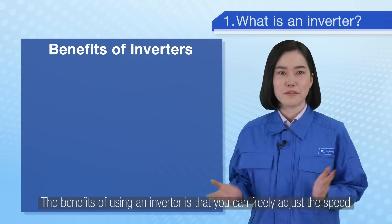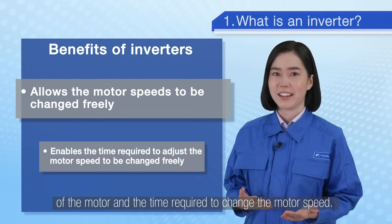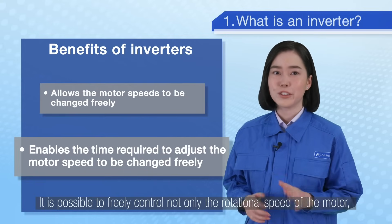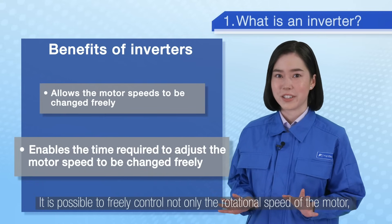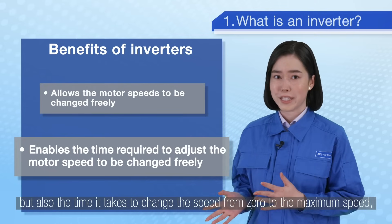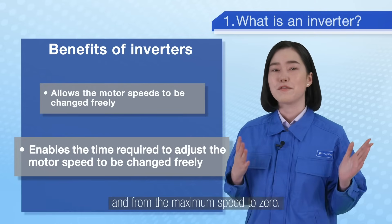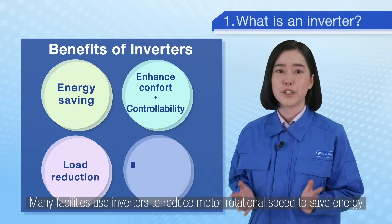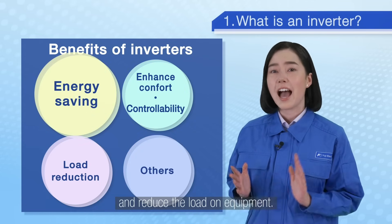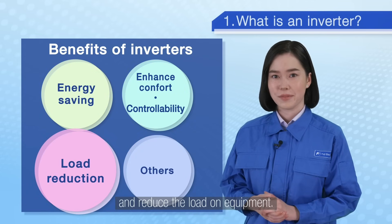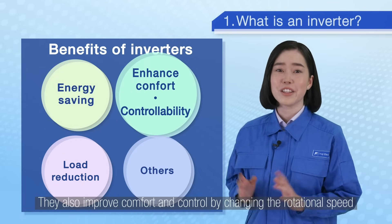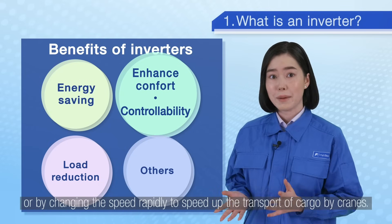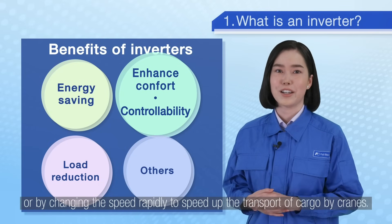The benefits of using an inverter is that you can freely adjust the speed of the motor and the time required to change the motor speed. It is possible to freely control not only the rotational speed of the motor but also the time it takes to change the speed from zero to the maximum speed and back to zero. Many facilities use inverters to reduce motor rotational speed to save energy and reduce the load on equipment. They also improve comfort and control by changing the rotational speed slowly to enhance ride comfort or by changing the speed rapidly to speed up the transport of cargo by cranes.